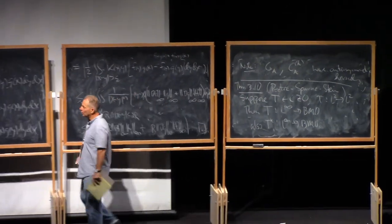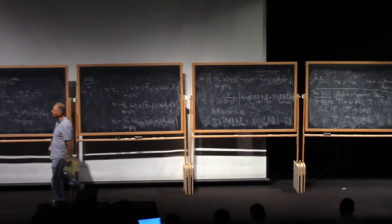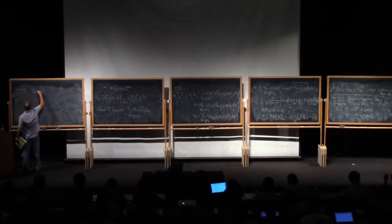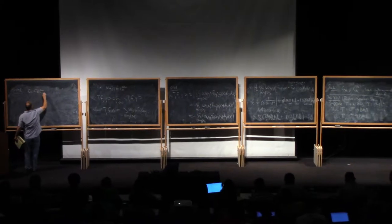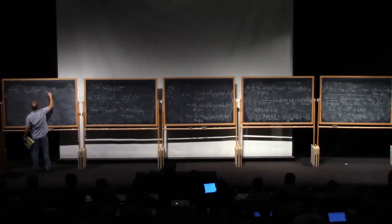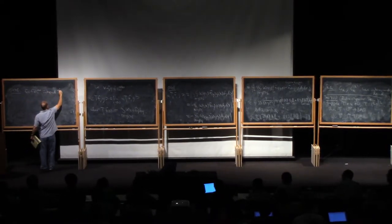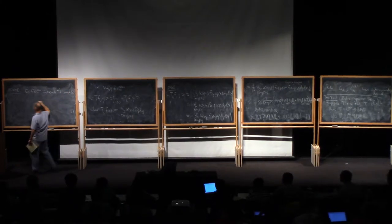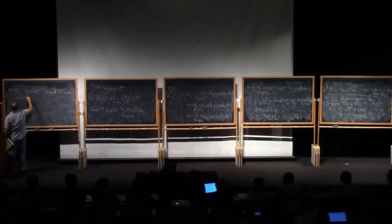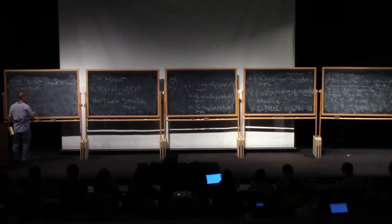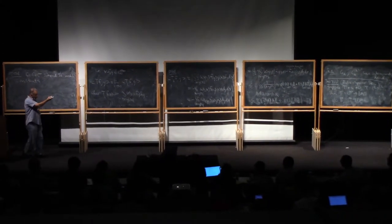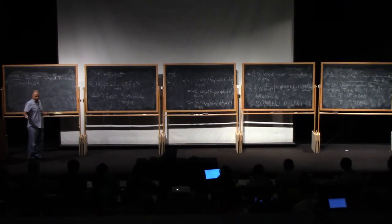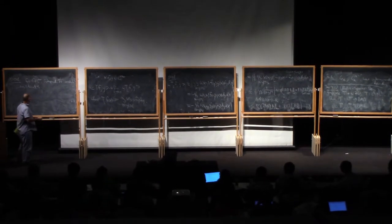So we have to interpret, so for F in L infinity, we have to interpret T of F modulo constants. And this makes sense, after all, because we're trying to show they map into BMO. BMO is only defined modulo constants, so this is natural.